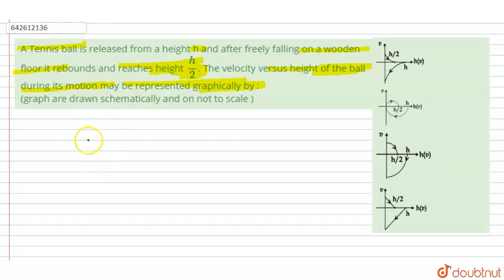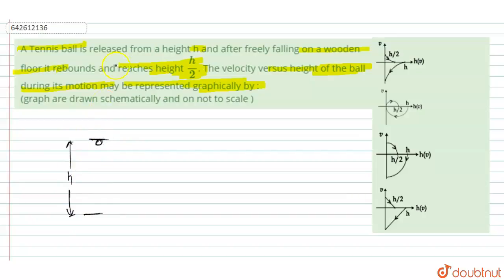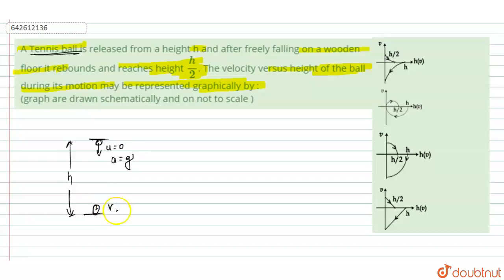First, consider the situation. The ball starts at height h. The tennis ball is in free fall, so initially u = 0 and acceleration = g. When the ball reaches the ground, it has some velocity v.